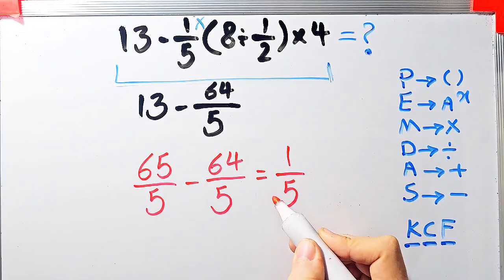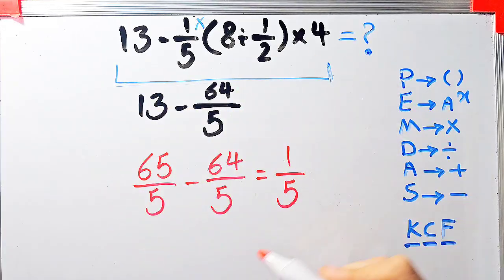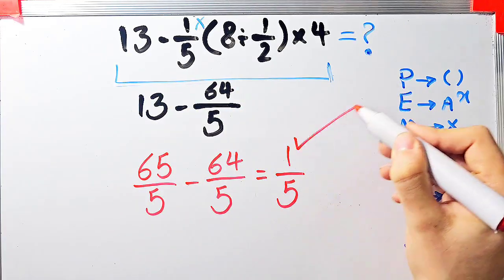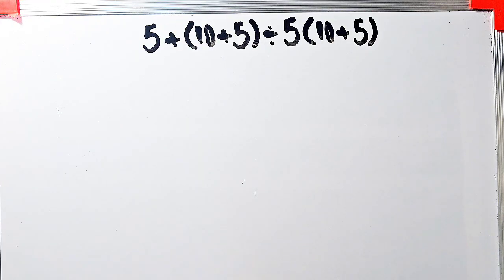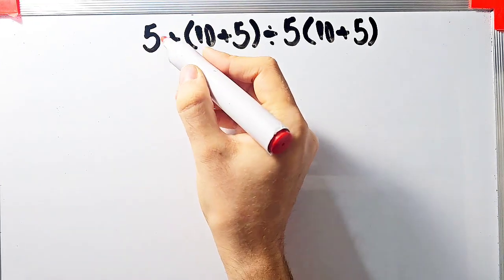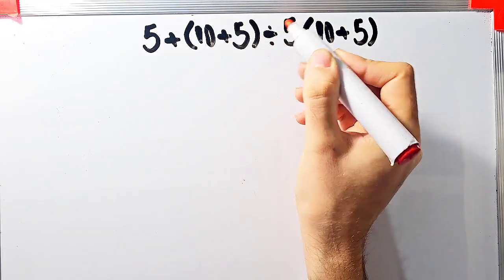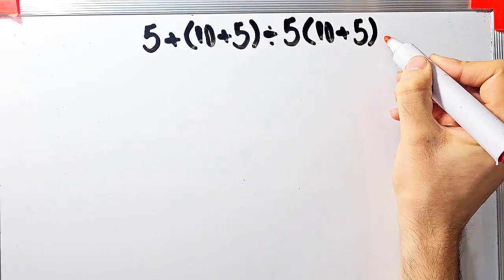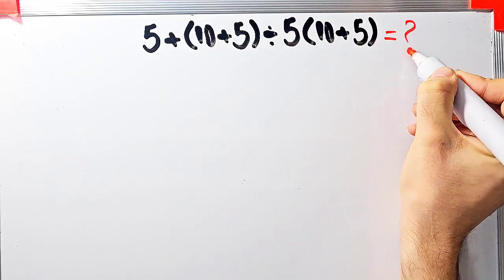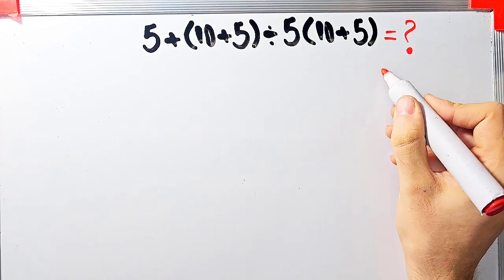Okay, if you're ready let's solve another question about PEMDAS rule: 5 plus open parentheses 10 plus 5 close parentheses divided by 5, then times 10 plus 5. What is the answer of this question? To solve this question we need to follow the order of operations, which is PEMDAS.